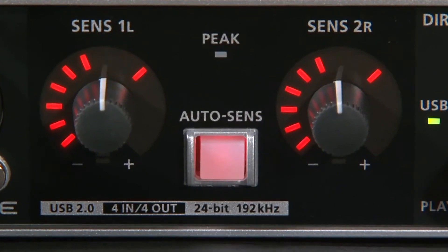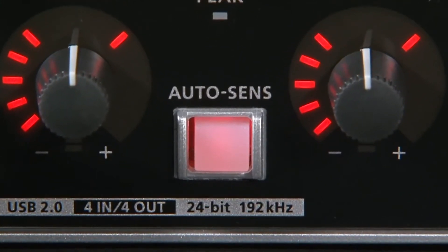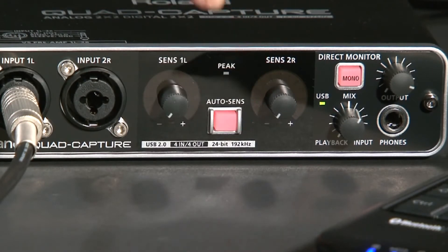With the AutoSense function, Quad Capture automatically sets the perfect input levels. Previously, you had to manually set the level of all input channels. It was time-consuming and difficult. But now, simply activate AutoSense. Push the knob at the center on the front panel or on the control panel.